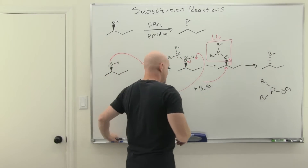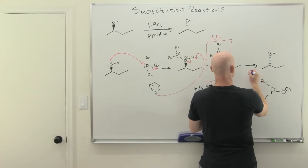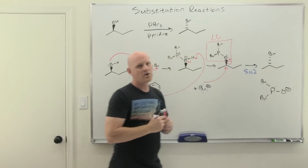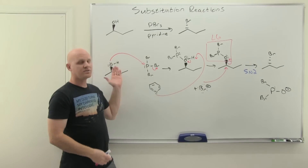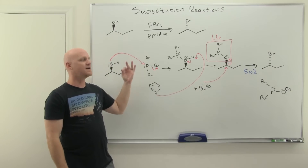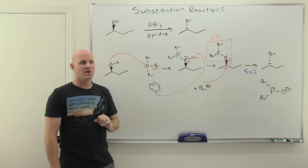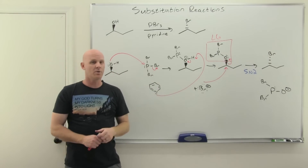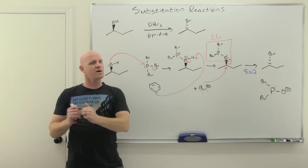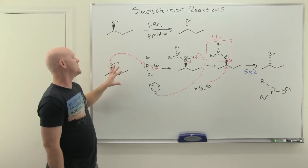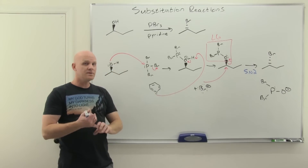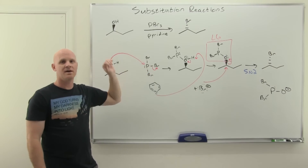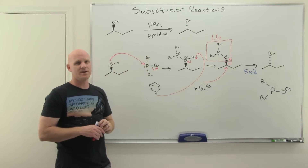Because PBr3 goes by SN2, it doesn't work for all alcohols. For SN2 to be possible, you need methyl, primary, or secondary substrate — this does not work for tertiary alcohols. If your goal is to turn a tertiary alcohol into the corresponding alkyl bromide, you should use HBr. But for methanol, primary, or secondary alcohols, PBr3 will work and it proceeds with inversion of configuration.